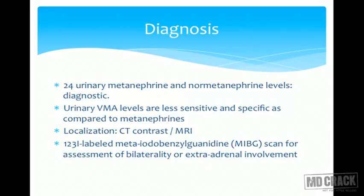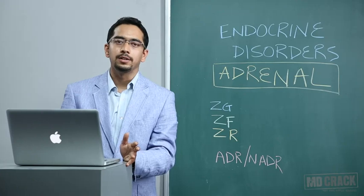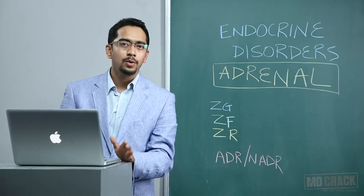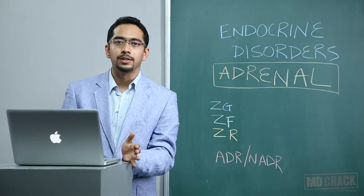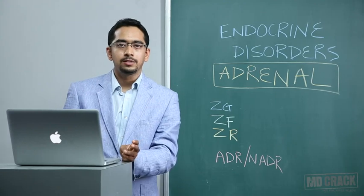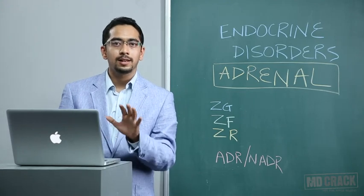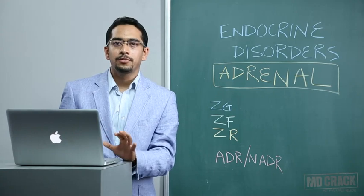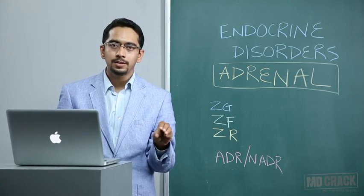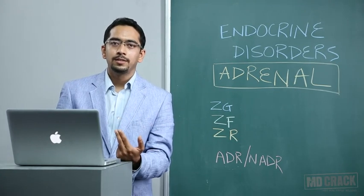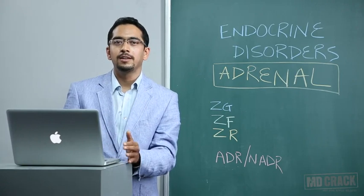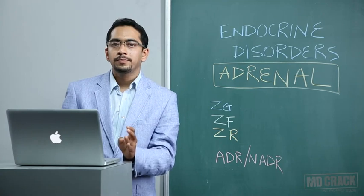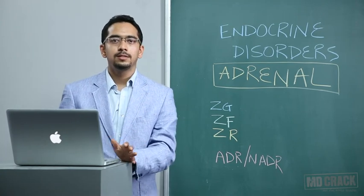Localization is done by CT contrast or MRI. MIBG scan with iodine-123 labeled MIBG is used for assessing bilaterality and extra-adrenal involvement. Younger patients are more likely to have bilateral and extra-adrenal disease. In young familial cases, perform an MIBG scan to ensure you are not dealing with multifocal pheochromocytoma — missing a bilateral focus could leave tumor behind if only an adrenal focus is identified and removed.